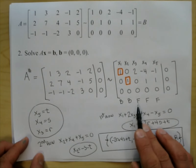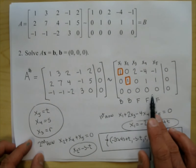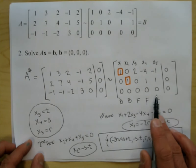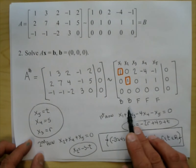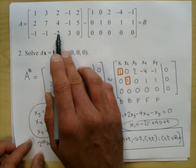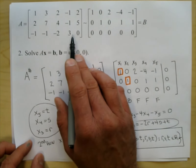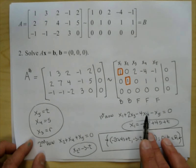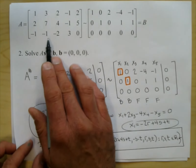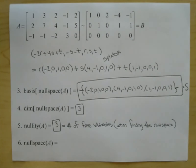The nullity plus the rank gives you the total number of variables. So rank plus nullity equals the number of columns in your original matrix. This is called the rank-nullity theorem: rank plus nullity equals the number of columns of a matrix, where columns represent the variables.